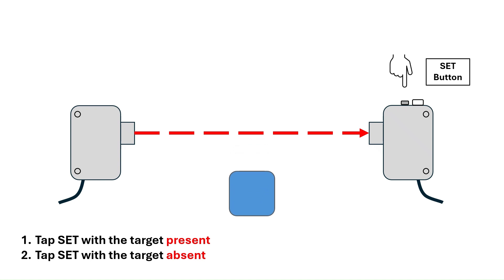Now the sensor is calibrated to detect this box. Now that we understand how to perform a two-point calibration, let's talk about how this calibration works.